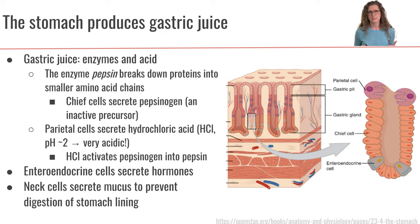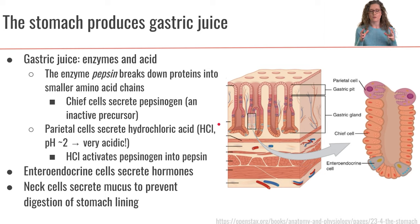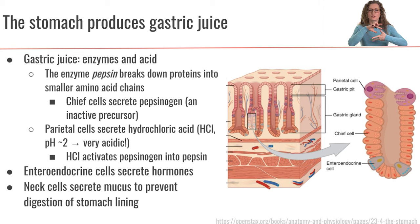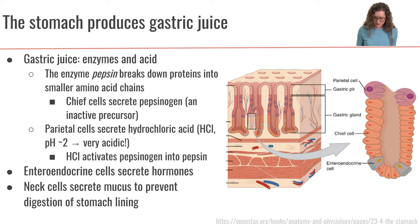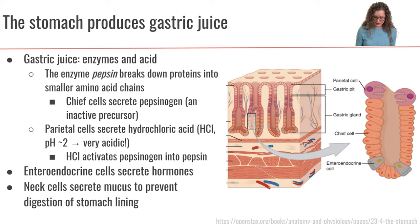The hydrochloric acid is also going to help unfold proteins. Remember, proteins are all formed in a very specific folding structure, and the hydrochloric acid is going to start to unfold those proteins. So those are some of the important characteristics of the gastric juice.